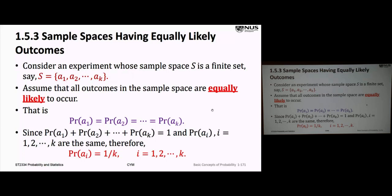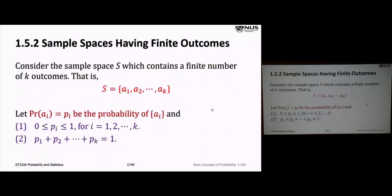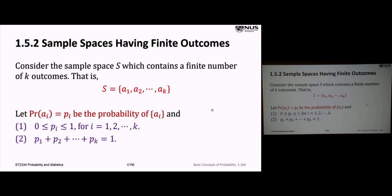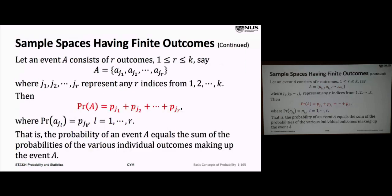We got into the notion of formulating this probability space in the previous example. What we were finishing up talking about was the idea that our sample space is a collection of a finite number of points A1 up to AK, and P sub i was the probability that the i-th event Ai occurs. We were talking about how we can use that combined with our probability axioms one, two, and three, and the resulting seven properties to answer some questions of practical interest.